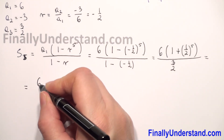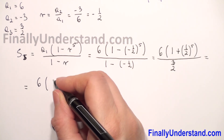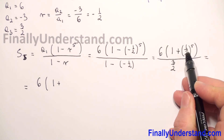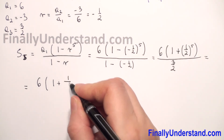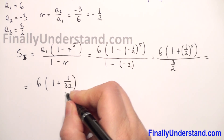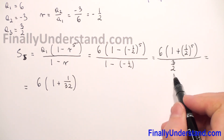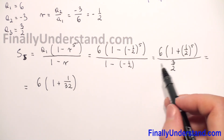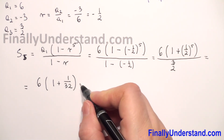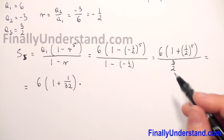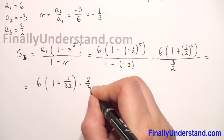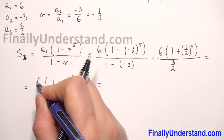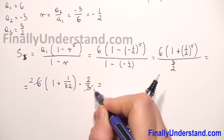We have 6 times (1 plus 1 over 2 to the 5th power). Now 1 to the 5th power is 1 and 2 to the 5th power is 32, so this becomes 6 times (1 plus 1 over 32), all over 3 over 2. Since we have a fraction bar, this means division, so we change division to multiplication and flip 3 over 2 to get 2 over 3.